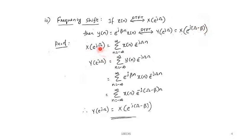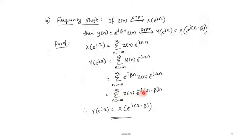To prove this, using the DTFT definition: Y(e^{j\omega}) = summation over n of y(n)·e^{-j\omega n} = summation over n of e^{j\beta n}·x(n)·e^{-j\omega n} = summation over n of x(n)·e^{-j(\omega−\beta)n}. Comparing with the DTFT equation, instead of e^{-j\omega n} we have e^{-j(\omega−\beta)n}, so the answer is X(e^{j(\omega−\beta)}). This demonstrates the frequency shift property.